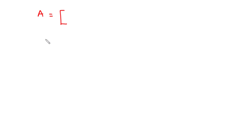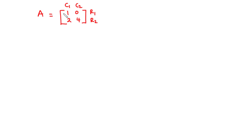Let's assume that we have A to be a matrix, and matrix A has elements 1, 0, 2, 4. This matrix has two rows and two columns — rows are on the horizontal and columns on the vertical. This is a 2x2 matrix.